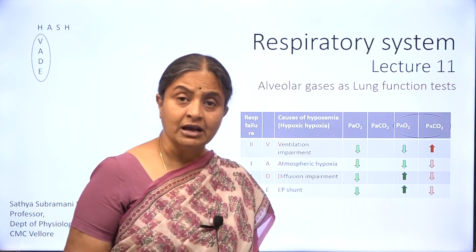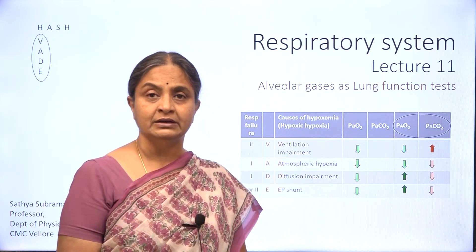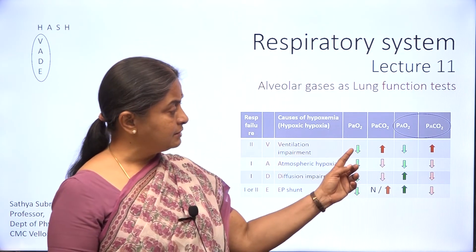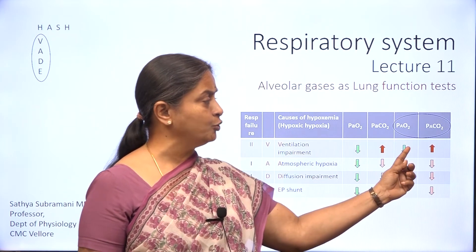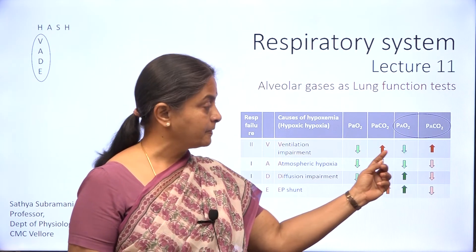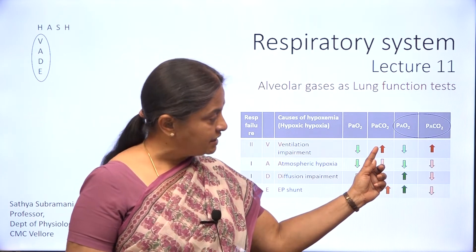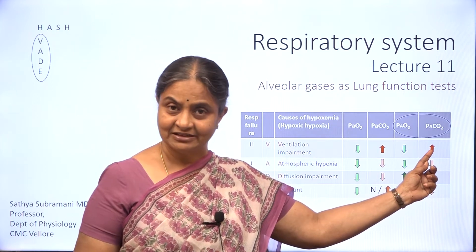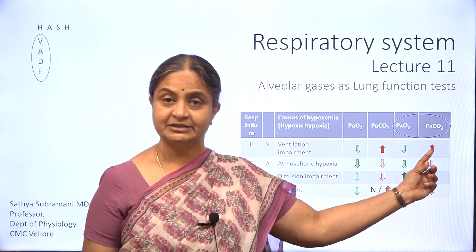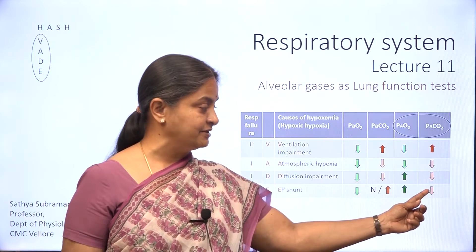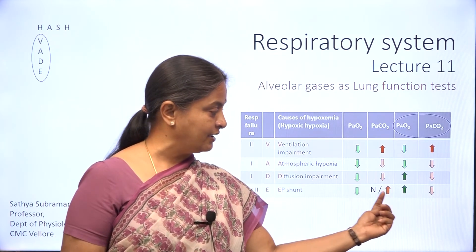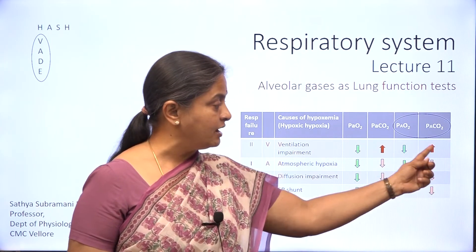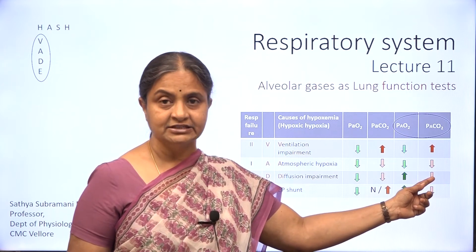Alveolar carbon dioxide can be a very useful lung function test too. Unlike arterial oxygen, which will always be lower than alveolar oxygen, arterial carbon dioxide is always equal to alveolar carbon dioxide. I have said before that this is a very important concept in respiratory physiology. Except in extrapulmonary shunt, where arterial and alveolar carbon dioxide may be different, the two are identical in all other clinical situations.